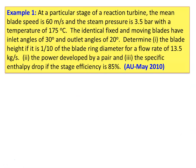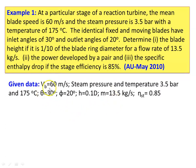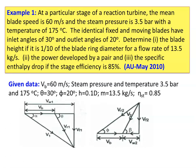Problem 1: At a particular stage of a reaction turbine, the mean blade speed is 60 m/s, steam pressure is 3.5 bar at 175°C. Identical fixed and moving blades have inlet angle theta = 30° and outlet angle = 20°. Blade height is 1/10th of the blade ring diameter, mass flow rate is 10.5 kg/s, and stage efficiency is 85%. Determine the blade height, power developed, and specific enthalpy drop.